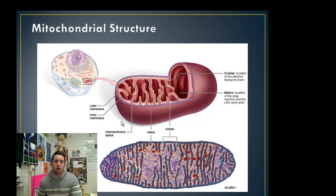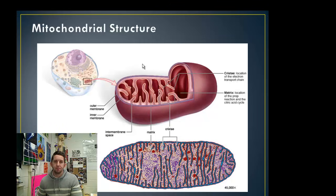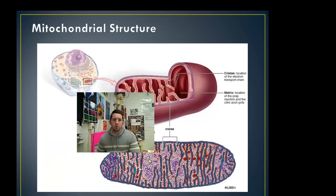Recall, glycolysis happens out here in the cytoplasm, in the cytosol, and if there's oxygen present, that pyruvate is going to make its way into this mitochondrion. It's going to go into the very inner part of the mitochondrion — the matrix. This is where the acetyl-CoA step happens, sometimes called the transition reaction or the preparatory reaction. This is a micrograph of a mitochondria, and this is the matrix on the inside.